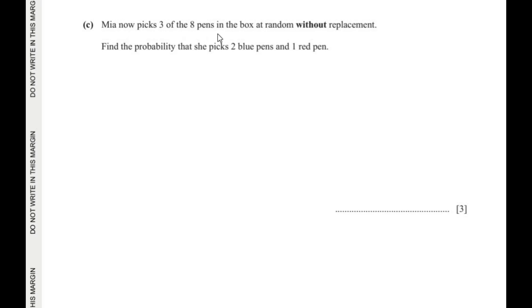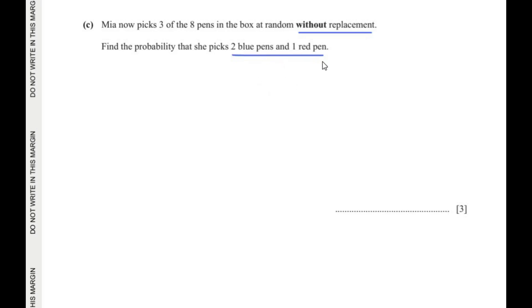Let us move on to the next sub-question. Mia now picks 3 of the 8 pens in the box at random without replacement. Find the probability that she picks 2 blue pens and 1 red pen. Let us find the combinations where we get 2 blue pens and 1 red pen when she picks 3 pens.